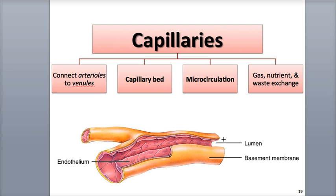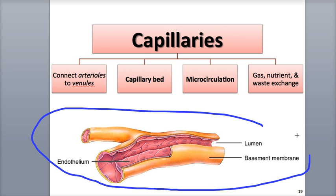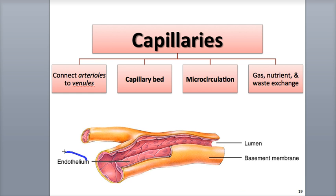The capillary wall is significantly reduced. They don't have either a tunica externa or a tunica media. They consist of just one layer of endothelial cells and a basement membrane, which helps them immensely in their exchange function. Plus, their high degree of branching and extensive surface area allows them to rapidly exchange substances between the blood and the surrounding interstitial fluid.